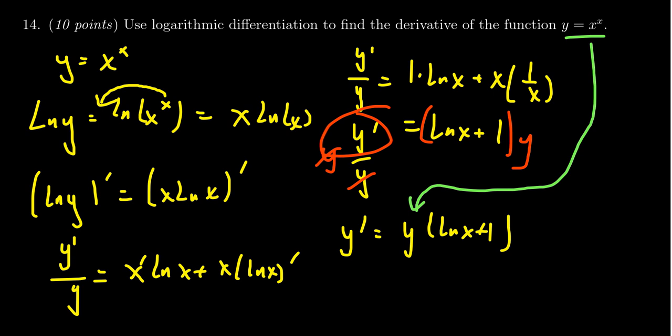And so we see that the derivative, y prime, is going to equal x to the x times the natural log of x plus 1, which is then the correct derivative of our function, which we found logarithmically.